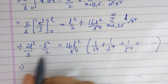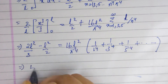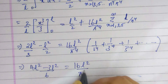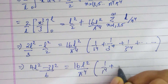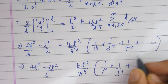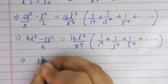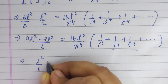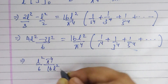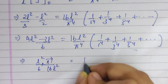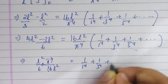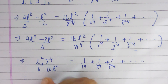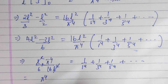That is l squared by 6. Taking the l squared to the left side, we get (4l squared minus 3l squared) by 6 equals 16 l squared by pi to the power 4 times the sum of 1 by 1 to the power 4 plus 1 by 3 to the power 4 plus 1 by 5 to the power 4 and so on. Finally, rearranging, pi to the power 4 divided by 16 l squared, with l squared cancelling, gives pi to the power 4 divided by 96 equals the required expression.